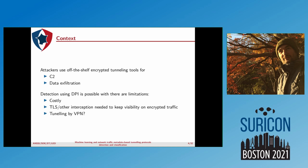First, DPI is costly. If you want to look at the traffic data, you need to use TLS interception to keep visibility on the encrypted traffic, and there is no real simple solution to apply DPI to VPN protocols.